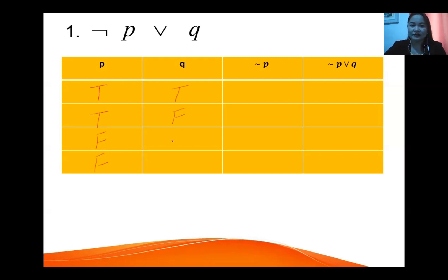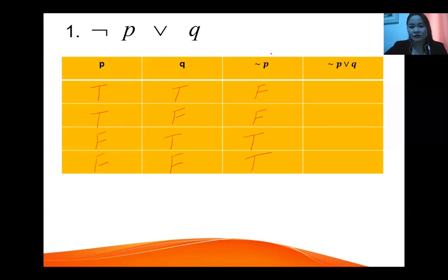For q: true, false, true, false. Since we need negation of p — p is true, so negation of true is false; negation of true is false; negation of false is true; negation of false is true. Then we have the statement negation of p OR q, combining the negation of p column with the q column.